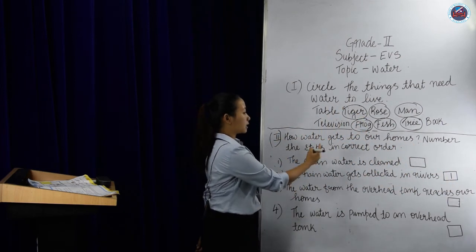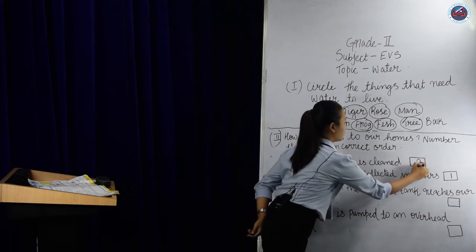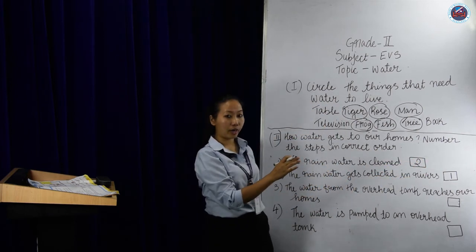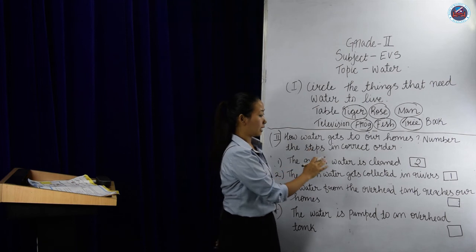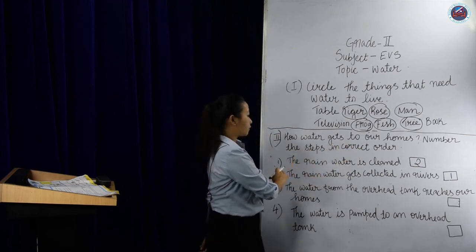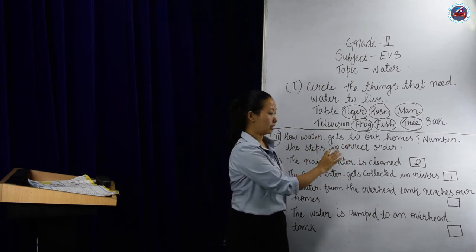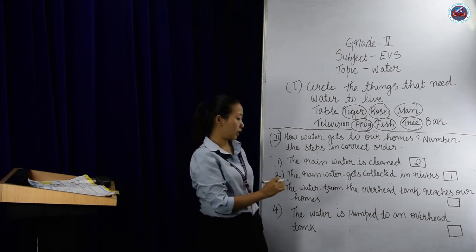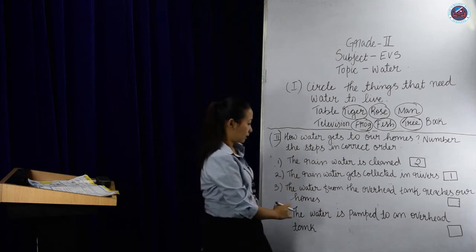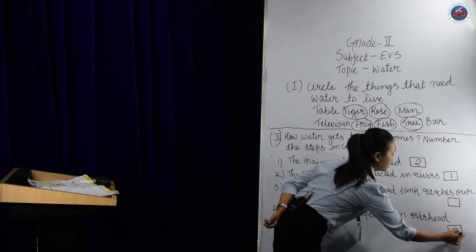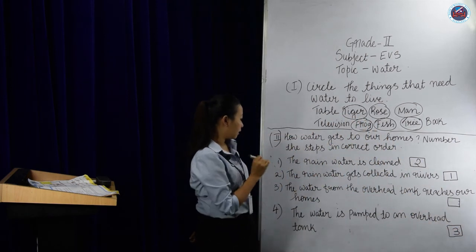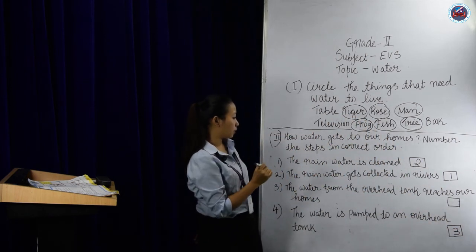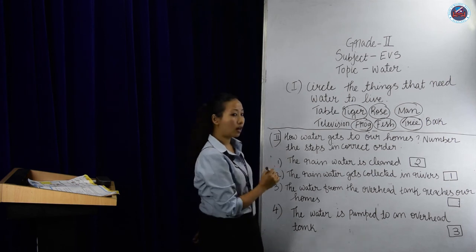The second step. The second step is the rain water is cleaned. After it gets collected in rivers, it disperses the rain water is cleaned. And the third step will be the water is pumped to an overhead tank. This is the third step. The last one is the water from the overhead tank reaches our homes.